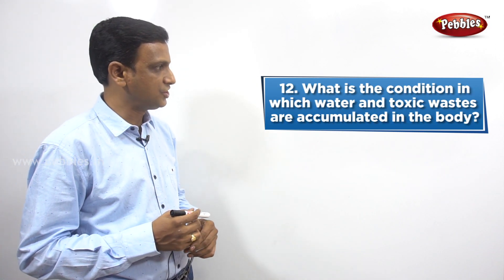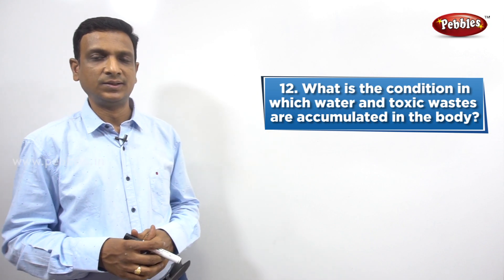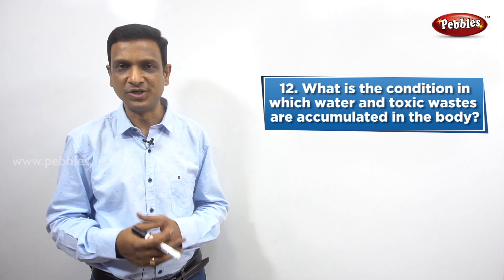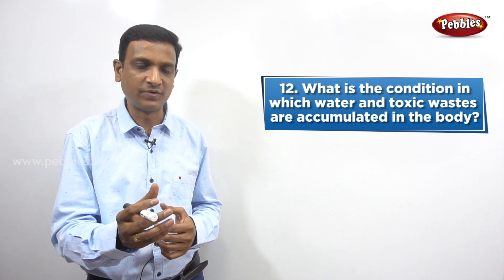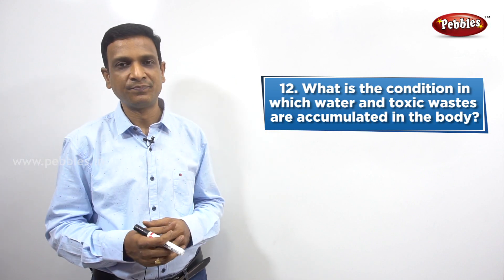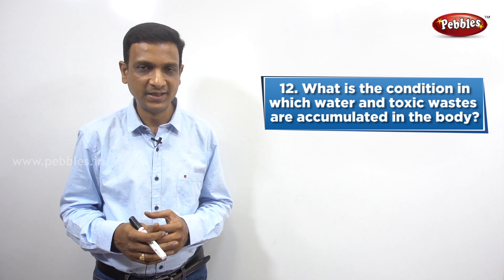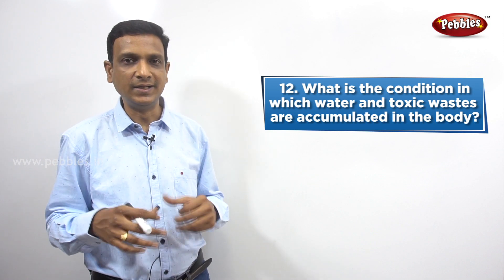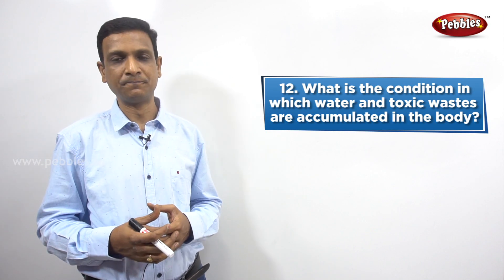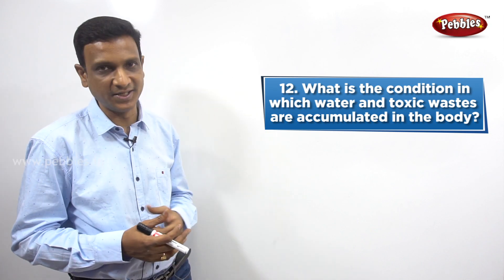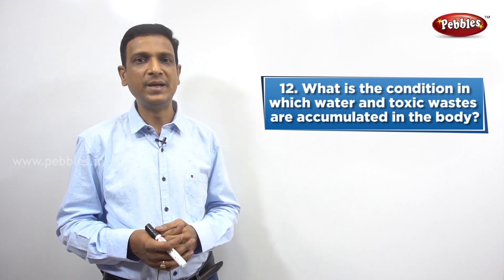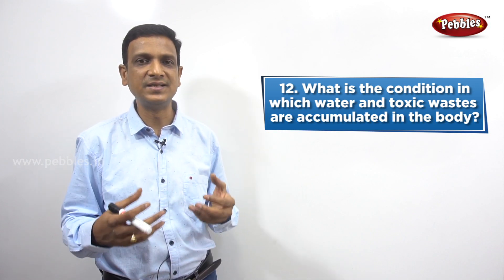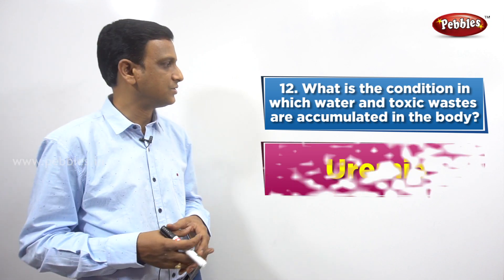The next question: what is the condition in which water and toxic wastes are accumulated in the body? This happens when kidneys are not functioning properly. The kidneys' function is to remove excess water and wastes from the body. If the kidneys fail due to infection or tissue damage, this leads to accumulation of water and toxic substances in the body. This condition is called uremia. The levels of urea and other substances increase in the blood and in the body tissues.